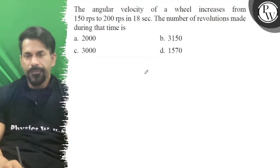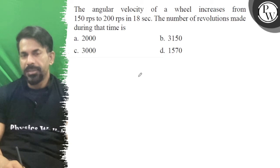Hello, let's see the question. The angular velocity of the wheel increases from 150 rps to 200 rps in 18 seconds. The number of revolutions made during this time is...